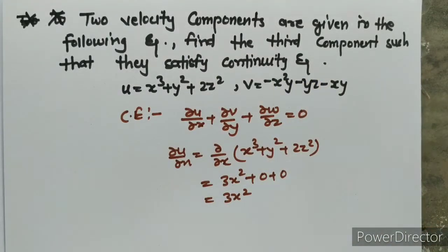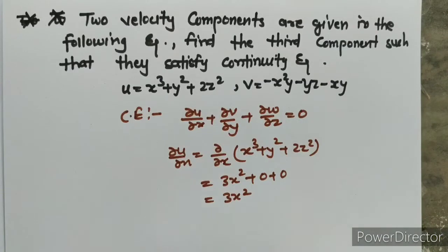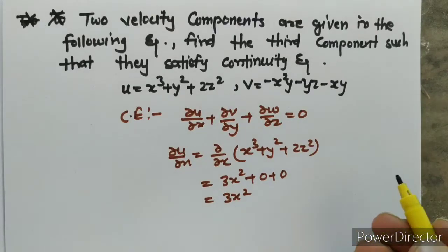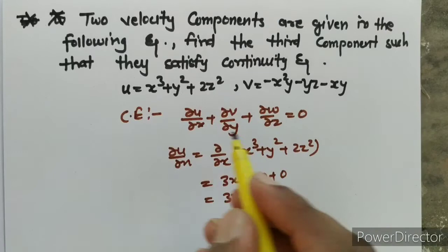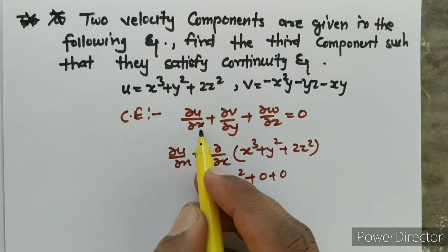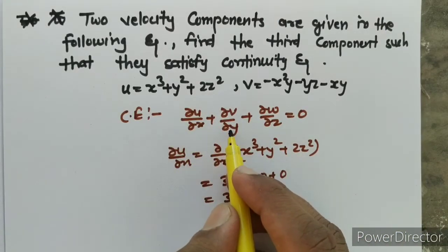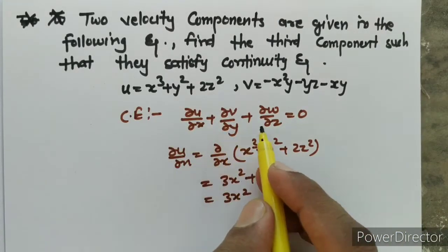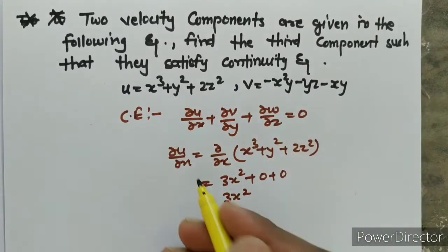Find the third component such that they satisfy the continuity equation. The continuity equation is: del u upon del x, plus del v upon del y, plus del w upon del z, equal to 0.